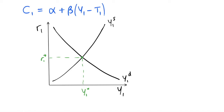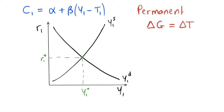Now that we have our consumption function, we can begin to think about what happens when we make changes in this model. To start, we can think about a permanent change in government spending. In much the same way as in the neoclassical model, a permanent change in government spending is equal to an equal change in tax revenue in each period. We're going to look at an increase in government spending and thus taxation — a decrease would simply work in the opposite direction.